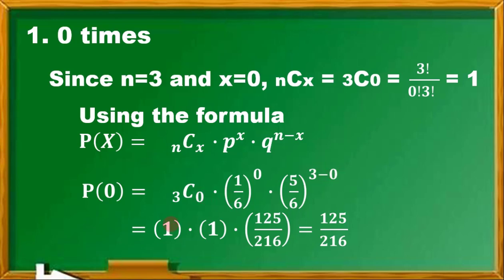This becomes 1 times 1—any number raised to a 0 exponent is 1—times 5 raised to 3. 5 times 5 times 5 is 125, and 6 raised to 3 is 216. So the final answer is 125 over 216.